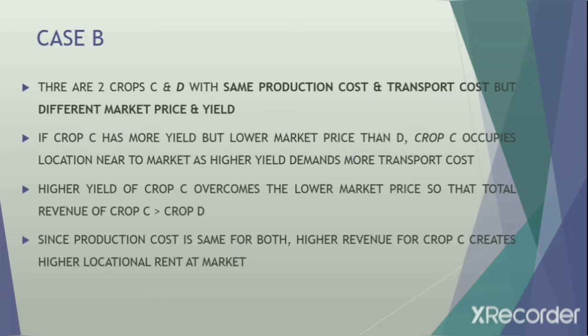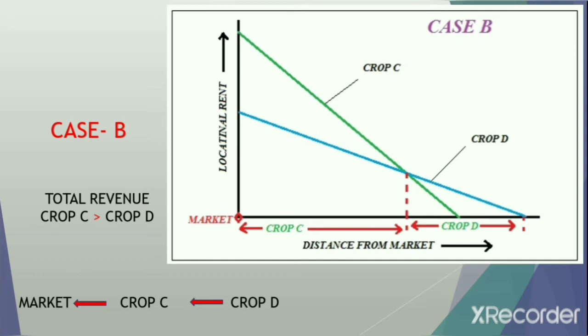In Case B, two crops C and D have the same production cost and transportation cost but different market price and yield. If crop C has more yield but a lower market price than crop D, crop C will still occupy the location nearest to the market because higher yield demands more transportation cost, but higher yield of crop C overcomes the lower market price. The crop revenue of C is greater than that of D, and since production costs are the same, higher revenue for crop C creates a higher locational rent at the market.